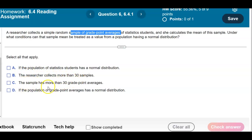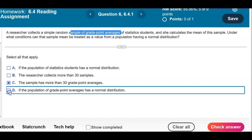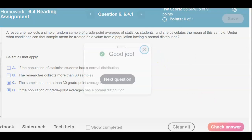We want to make sure that the sample has more than 30 grade point averages and if the population of grade point averages has a normal distribution since that's what the researcher is looking at. And there's our result.